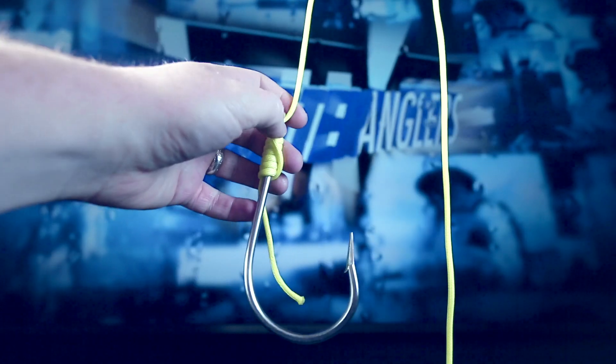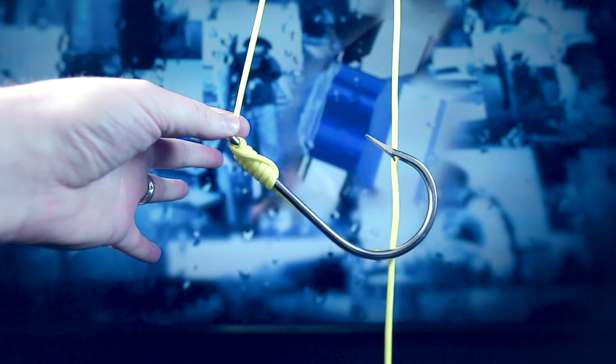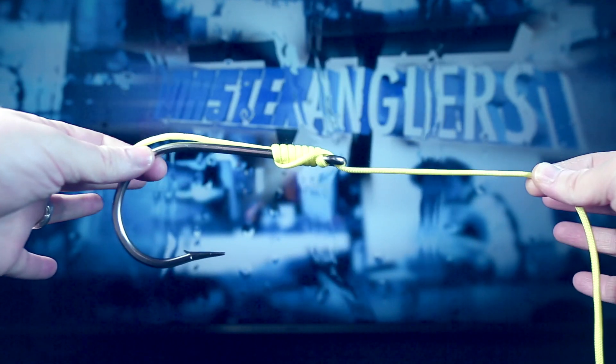If tied correctly, the hook should hinge under pressure at the eye, securing the fish in place. And that's how you tie the easy snell knot.